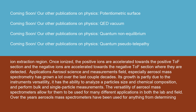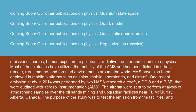The aerosol science and measurements field, especially aerosol mass spectrometry, has grown a lot over the last couple of decades. Its growth is partly due to the instrument's versatility — its ability to analyze a particle's size and chemical composition and perform bulk and single particle measurements. The versatility of aerosol mass spectrometers allows them to be used for many different applications in both the lab and field, from determining emission sources, human exposure to pollutants, radiative transfer, and cloud microphysics. Most of these studies have utilized the mobility of the AMS and it has been fielded in urban, remote, rural, marine, and forested environments around the world, as well as deployed on mobile platforms such as ships, mobile laboratories, and aircraft.